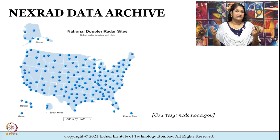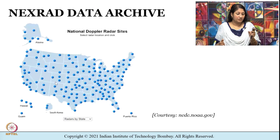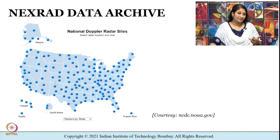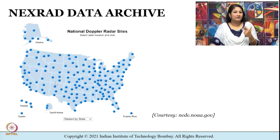NEXRAD is a system of 160 high-resolution Doppler weather radars that operate in the S-band of the microwave region — these are S-band DWRs. The locations of these radars are shown as dots and they are jointly operated by the National Weather Service (NWS), the Federal Aviation Administration (FAA), and the United States Air Force. NEXRAD helps detect precipitation and wind information, and NCEI provides free access to NEXRAD level 2 and level 3 products.